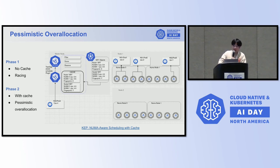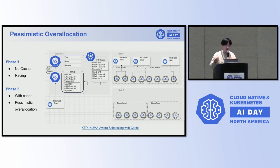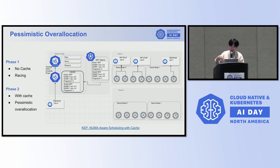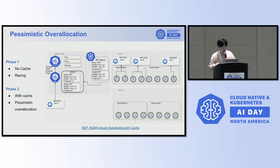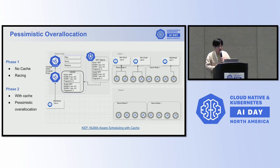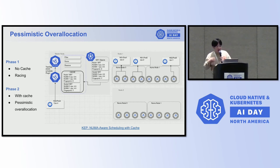To address this issue, Kubernetes SIG introduced NUMA node-level cache in the scheduler plugin. For example, in this picture, since the scheduler doesn't make the final decision on which NUMA node the pod should be assigned to, on node 2, when both NUMA node 0 and NUMA node 1 can meet the pod's resource requirements, the scheduler plugin doesn't know which NUMA node to account the resources on. To address this, a pessimistic overall allocation mechanism was introduced. Resources are accounted for on each NUMA node that meets the requirements, and once the final allocation result is reported to NRT, the over-allocated resources are released.